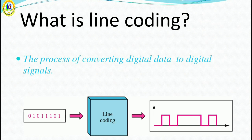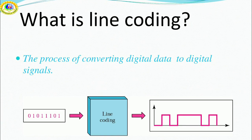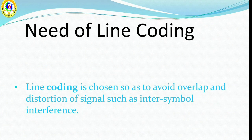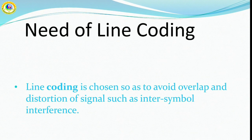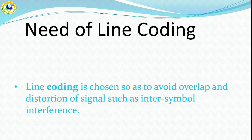What is line coding? It is the process of converting digital data to digital signals. Need of line coding? It is used to avoid overlap and distortion of signal such as ISI, inter-symbol interference.